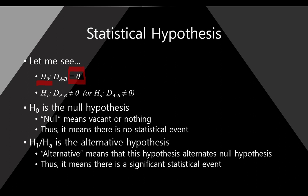The meaning of 'null' is vacant or nothing. This null hypothesis means there is no statistical event — there is nothing. On the other hand, H1, sometimes called HA, is the alternative hypothesis. The major focus of the alternative hypothesis is 'not equal to 0.' The alternative means that this hypothesis alternates the null hypothesis, so it means that there is a significant statistical event.